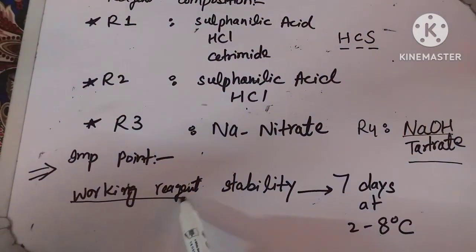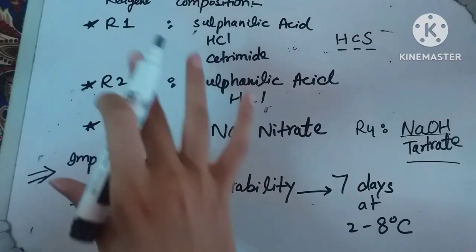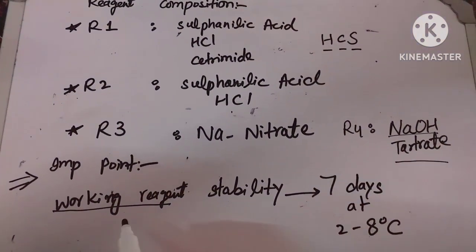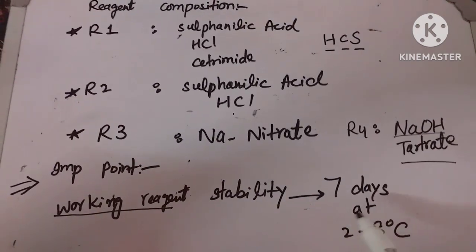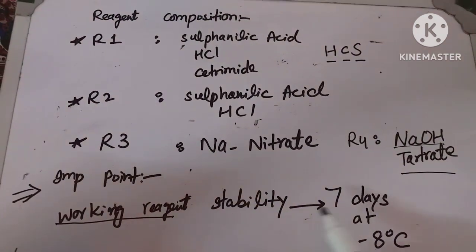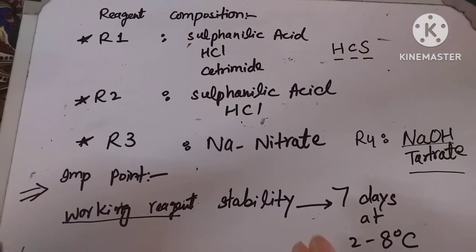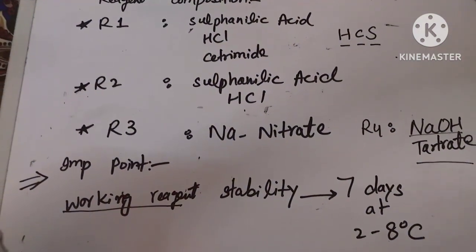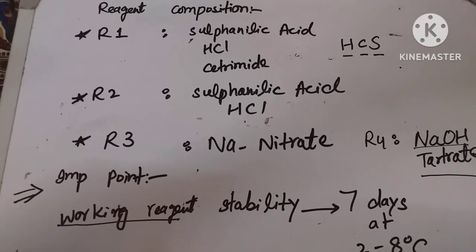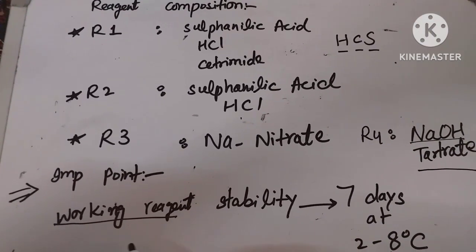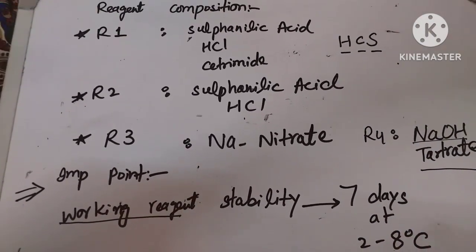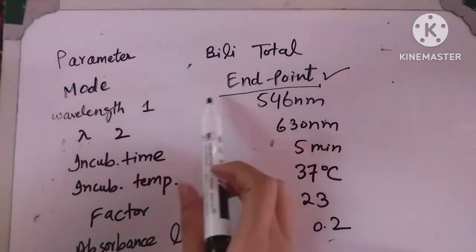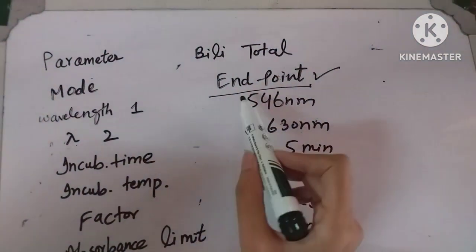An important point: the working reagent stability is 7 days at 2 to 8 degrees Celsius. Working reagent means after mixing all these reagents together into one mono-reagent. If the reagent bottles have not been opened, they remain stable up to their expiry date. But once you open and mix them, the working reagent is only stable for a few days.